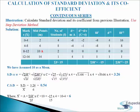In the last column we will write fd dash squared; we will multiply frequency with d dash squared. So 4 multiplied by 4 is 16, 8 multiplied by 1 is 8, 2 multiplied by 0 is 0, 1 multiplied by 1 is 1. We will add up the data and get sigma fd dash squared equals to 25. Now we will calculate SD by applying the formula: the square root of (sigma fd dash squared divided by sigma f) minus (sigma fd dash divided by sigma f) squared, multiplied by c. Putting in the values, we get 3.26 as standard deviation.